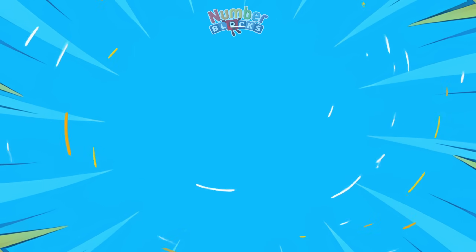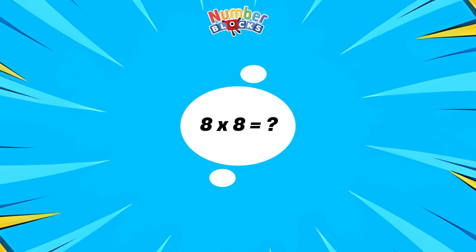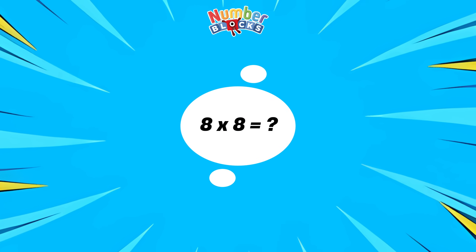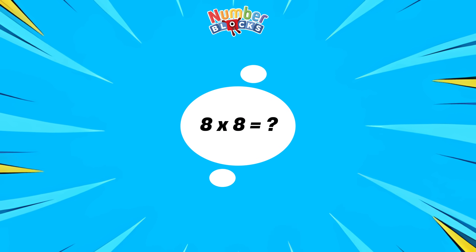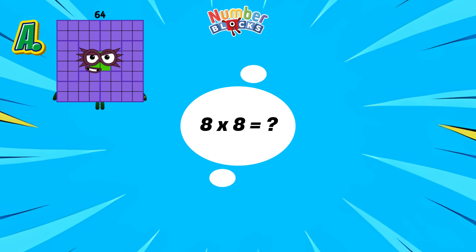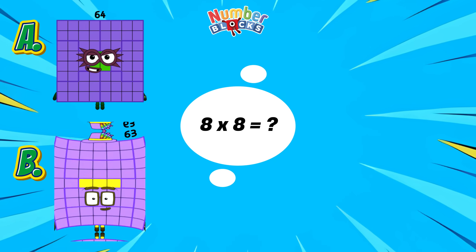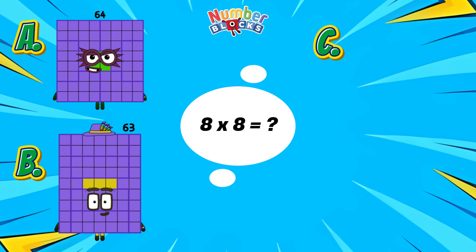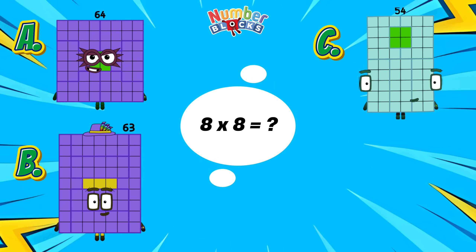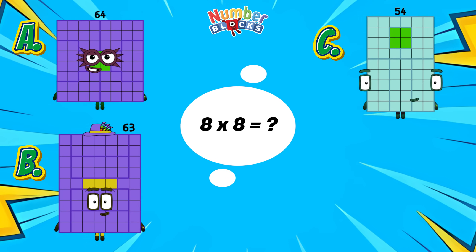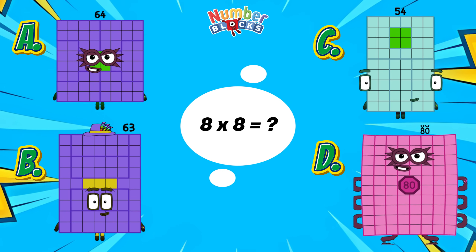8 multiplied by 8 is equals to... A, 64. B, 63. C, 54. Or letter D, 80.